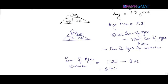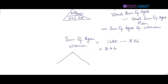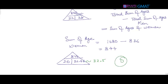The number of women is 26 and the total sum of their ages is 844. To find the average, divide 844 by 26, which gives 32.46, approximately 32.5. That's answer option D. You don't even have to form an equation to solve this question — just use the average triangle and you're good to go.